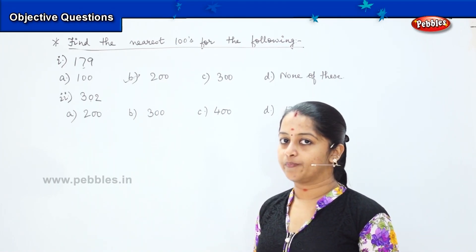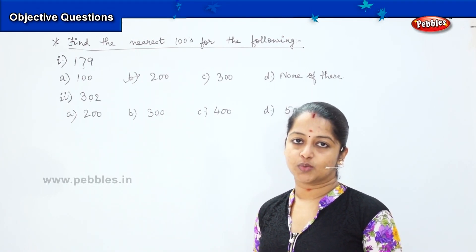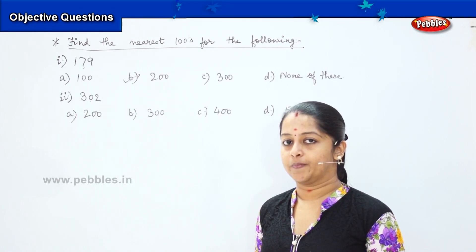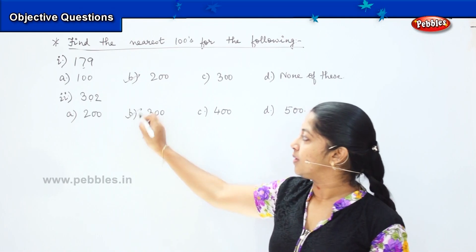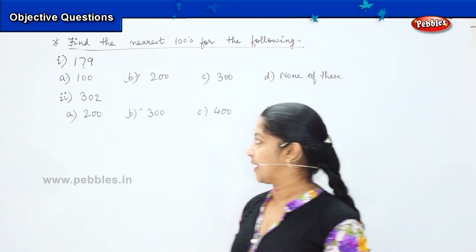What am I going to do now? I am going to round it to the preceding nearest hundreds value which is for this 3. What will be the number preceding? Good, it is 300, right? My nearest hundreds value will be option B which is 300. Got it children?